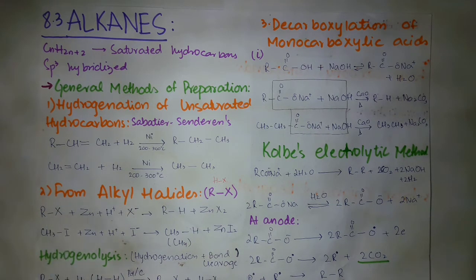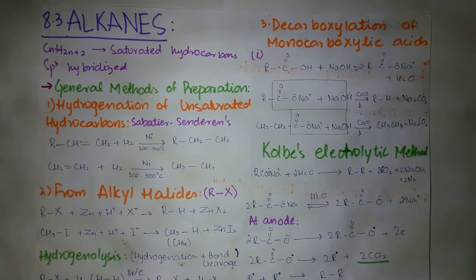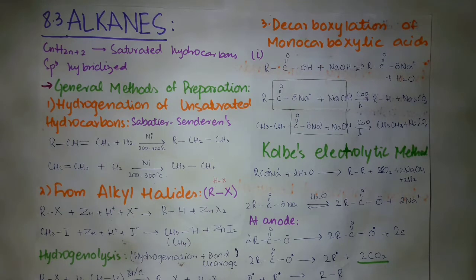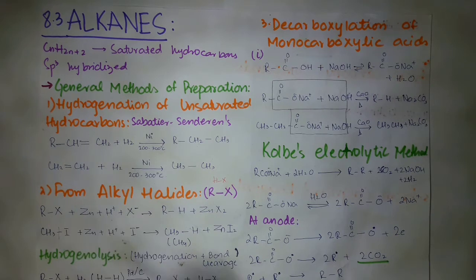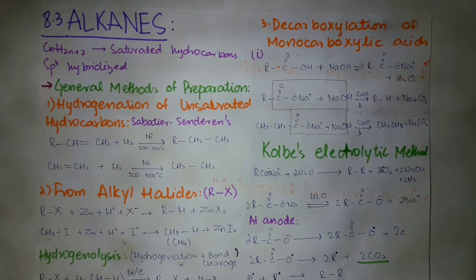If R is CH3, then this is methyl iodide, which is an alkyl halide. It is treated in the presence of zinc with hydroiodic acid — which is formed when hydrogen iodide is dissolved in water. The bond cleaves: CH3 combines with hydrogen to form CH4, which is methane, and zinc combines with iodide to form zinc iodide.